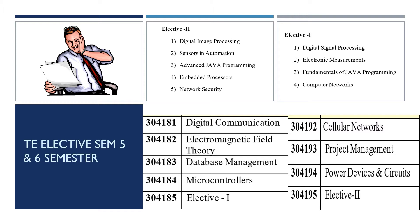If you choose Digital Signal Processing in the first semester, then definitely for the second semester your choice is Digital Image Processing. If you choose Computer Networks, then your choice is Network Security for the second semester. For Fundamentals of Java, the paired choice is Advanced Java Programming. For Electronic Measurements, it is better to take Sensors in Automation or Embedded Processor.